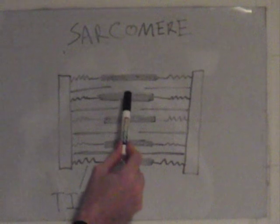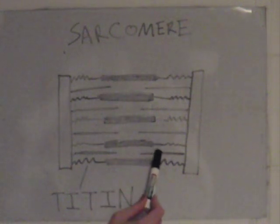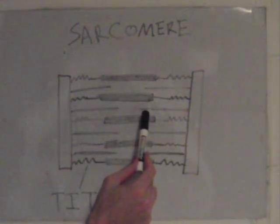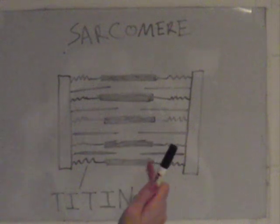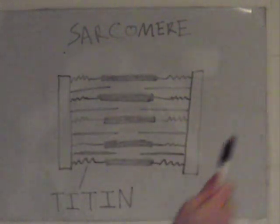As the sarcomeres shorten, the muscle fiber shortens. As the sarcomeres lengthen, the muscle fiber lengthens. Here is my beautifully rendered model of a sarcomere. We have two ends of the sarcomere, and between them we have thick protein filaments and thin protein filaments. When you contract your muscle, there is a series of chemical events that causes the thick protein filament to bind to the thin one and pull it, pulling the two ends of the sarcomere closer. When that happens in thousands of sarcomeres in series, the muscle shortens.